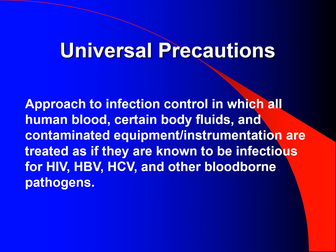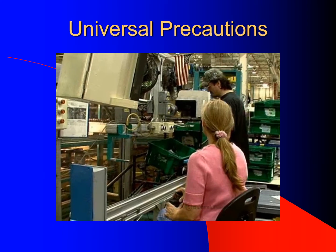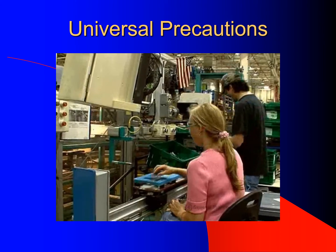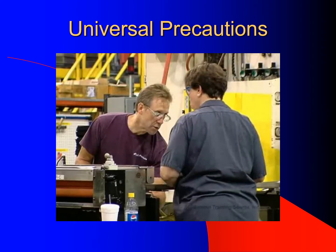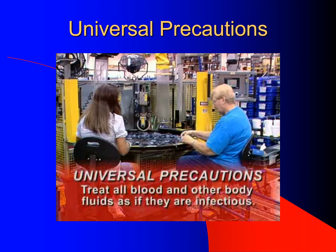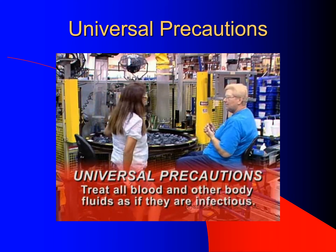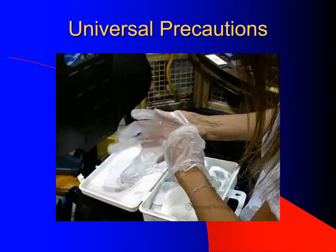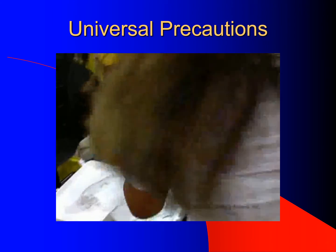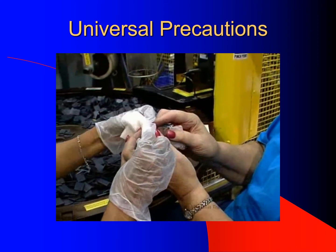Universal precautions: an approach to infection control in which all human blood, certain bodily fluids, and contaminated equipment or instrumentation are treated as if they are known to be infected with HIV, HBV, HCV, and other bloodborne pathogens. The key question is: how do you know if someone is infected with a bloodborne pathogen? The answer is, you don't. So take universal precautions — treat all blood and other body fluids as infectious. Use personal protective equipment, work practice controls, and engineering controls to reduce exposure risks for all employees.